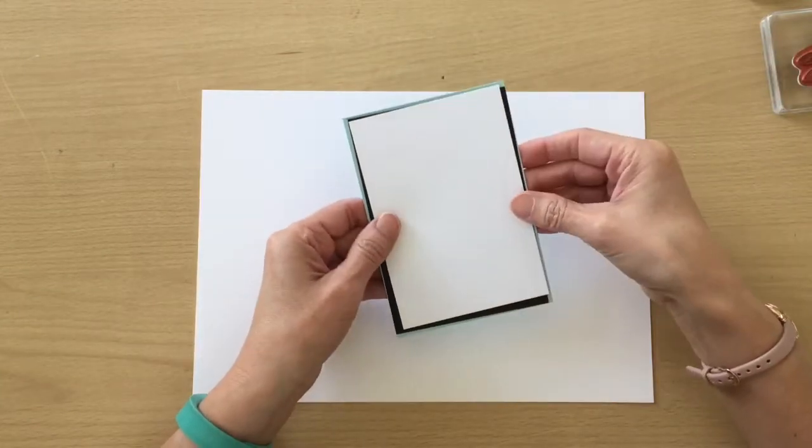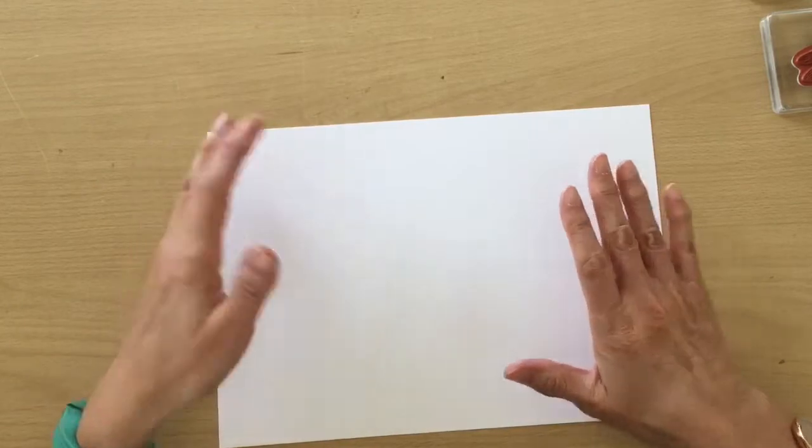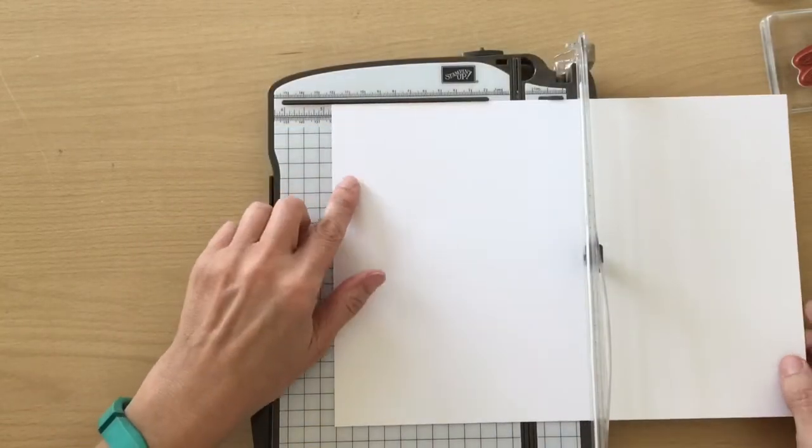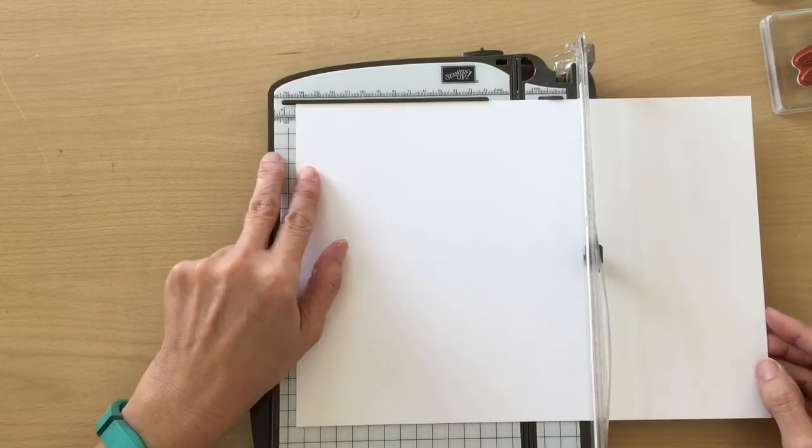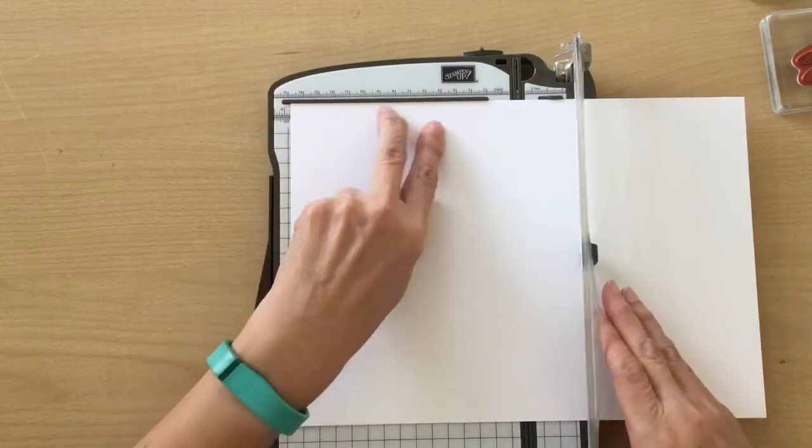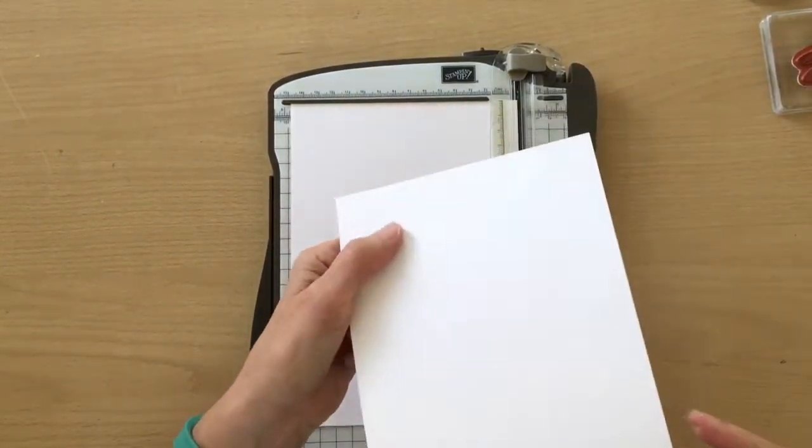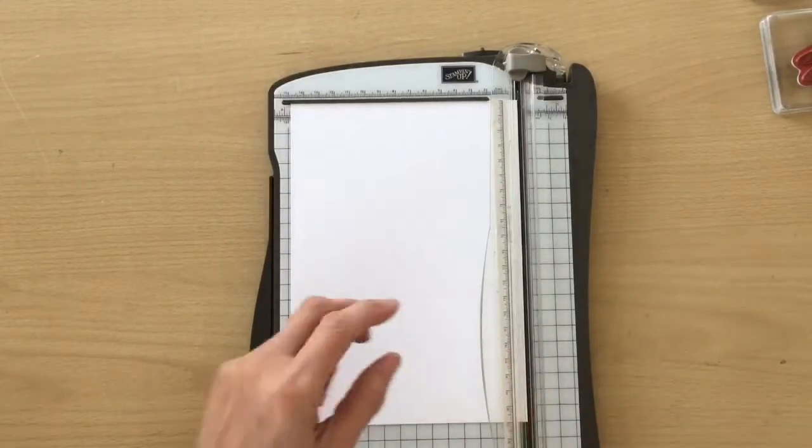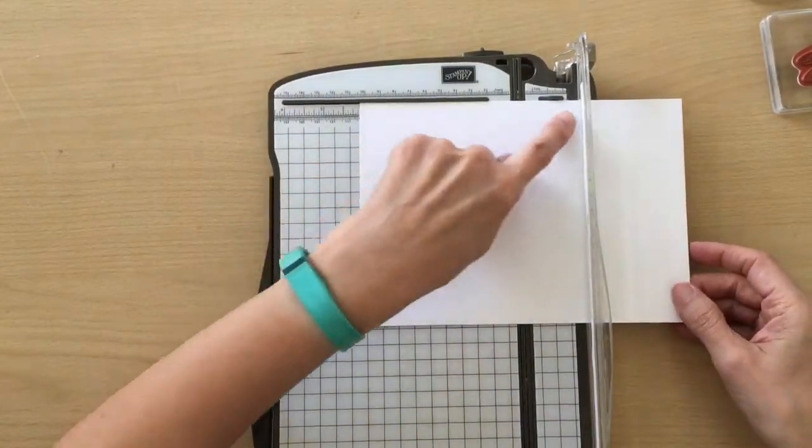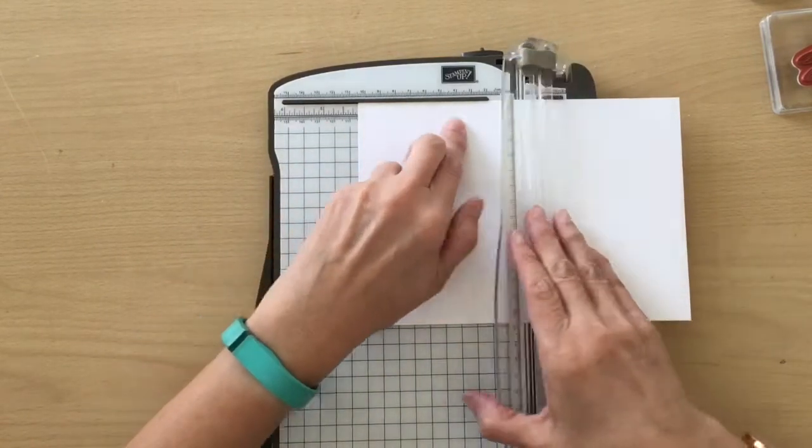Lastly we have a piece of thick Basic White and we're going to turn this into our card base. This is A4. Going to put this on 14.9 or just under 14.9 and cut. You can put this piece away for another card. Then turn, and so we have the long side at the top, go along to 10.5 centimeters and score.